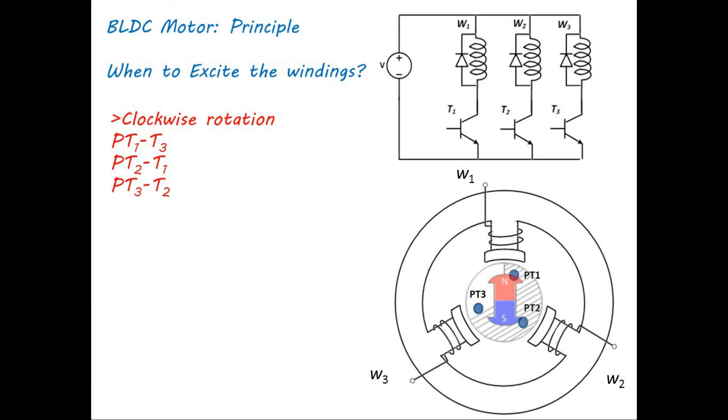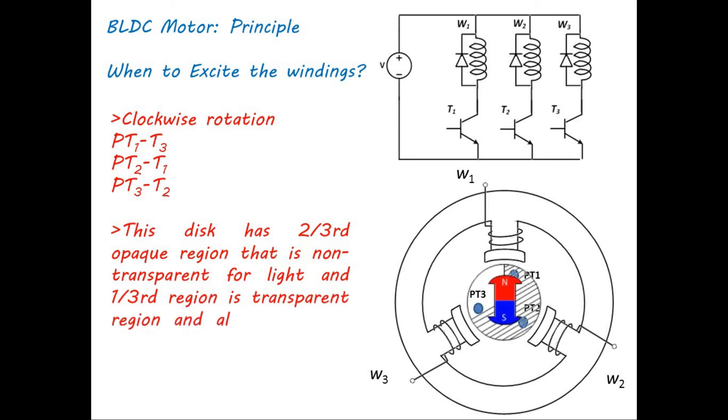The rotor of BLDC motor is attached with special disk as shown here. This disk has two-thirds opaque region, that is non-transparent for light, and one-third region is transparent and allows the light to pass through.